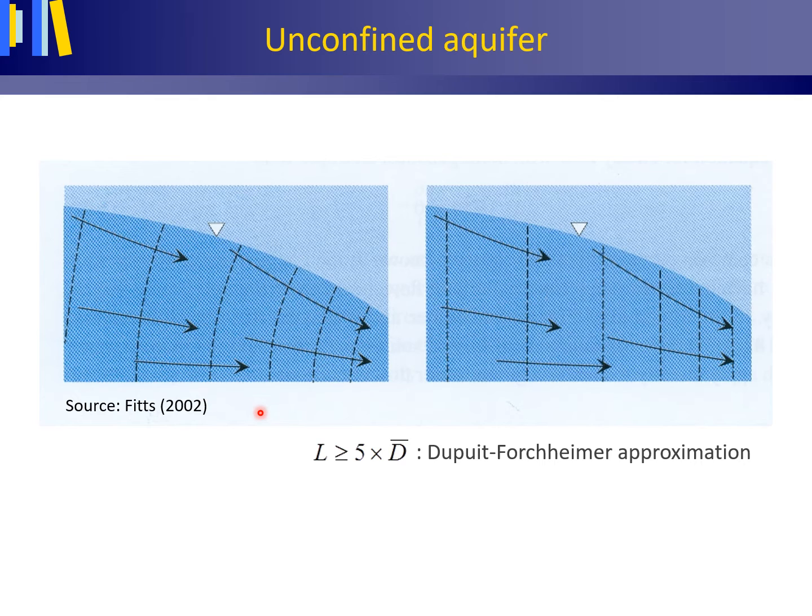To the left, this figure shows actual two-dimensional groundwater flow. And to the right, groundwater flow modeled with the Dupuit-Forchheimer approximation. Please note the vertical equipotentials.